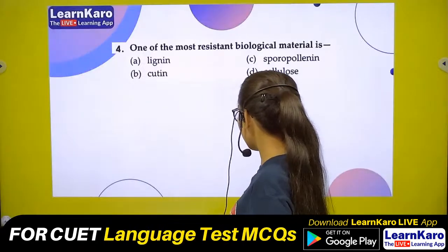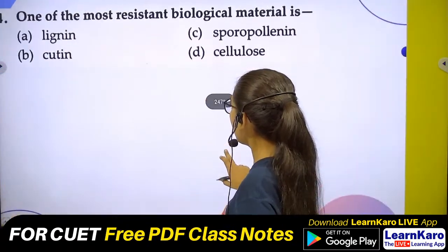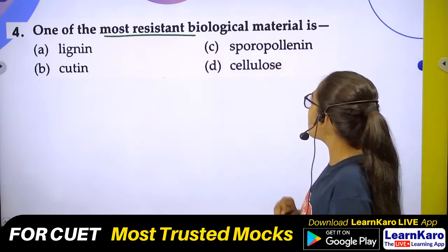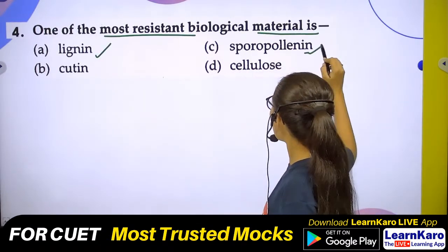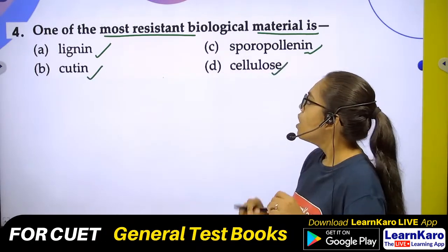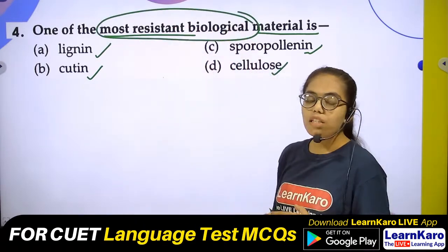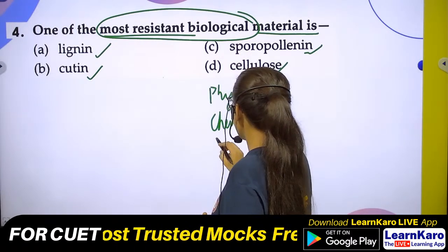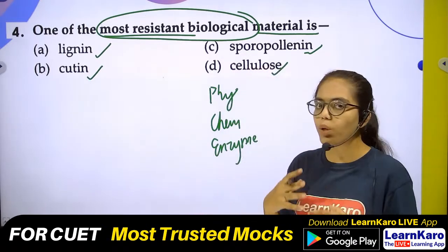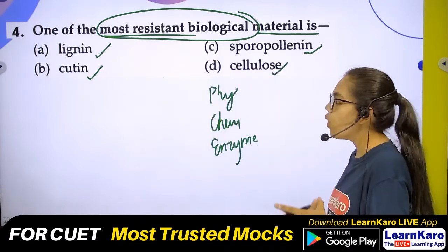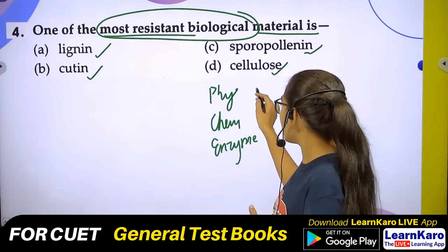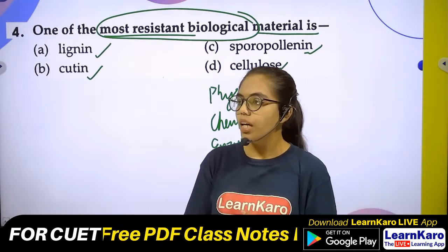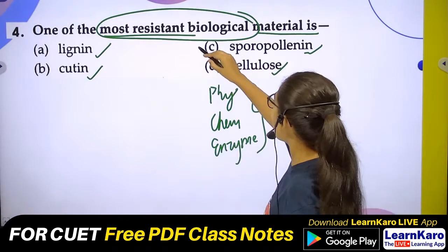Next question: One of the most resistant biological materials is? Options: Lignin, Sporopollenin, Cutin, and Cellulose. The most resistant material — whether you do physical treatment, chemical treatment, enzymes, or high temperature — nothing degrades it. The correct answer is Sporopollenin.